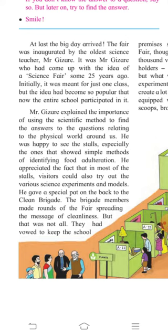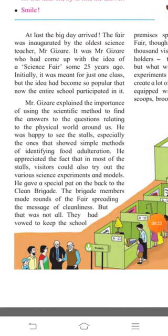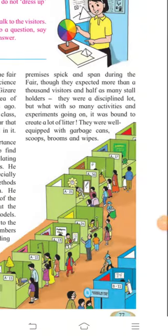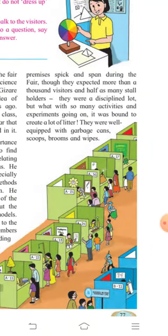The clean brigade had vowed to keep the school clean. 'Vowed' means they made a solemn promise to keep the school neat and tidy. They had vowed to keep the school premises spick and span — meaning clean and tidy — during the fair. They expected more than a thousand visitors and half as many stall holders. Though they were a disciplined lot, with so many activities and experiments going on it was bound to create a lot of litter.